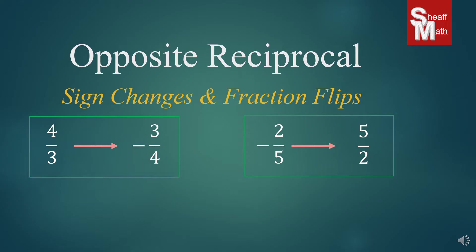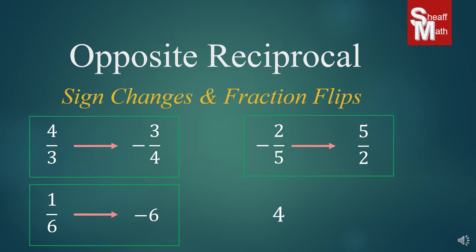These are easy when we have fractions, so let's look at a couple of interesting ones. For 1/6, the opposite would be negative, and flipping the fraction gives 6/1, which is really just 6. So the opposite reciprocal of 1/6 is negative 6. The last example starts with 4. Changing the sign gives negative, and since 4 is really 4/1, flipping it gives negative 1/4. That's how we find the opposite reciprocal.